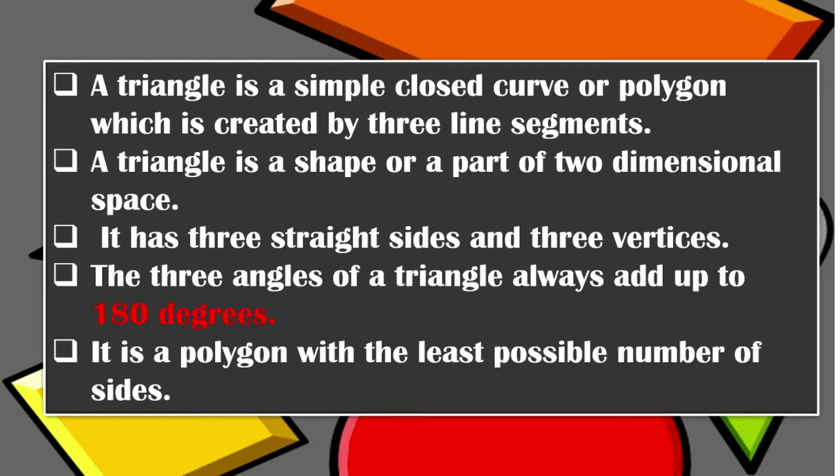A triangle is a simple closed curve or a polygon, which is created by three line segments. A triangle is a shape or a part of two-dimensional space. It has three straight sides and three vertices. The three angles of a triangle always add up to 180 degrees. It is a polygon with the least possible number of sides.